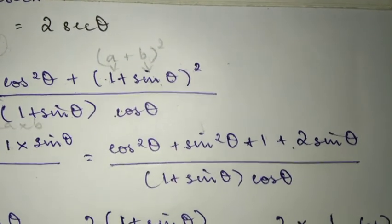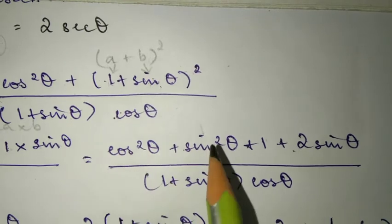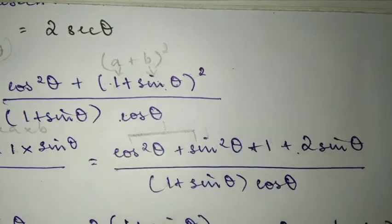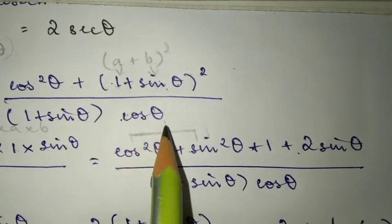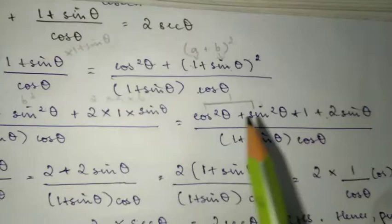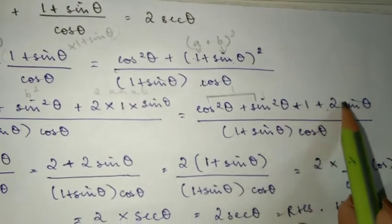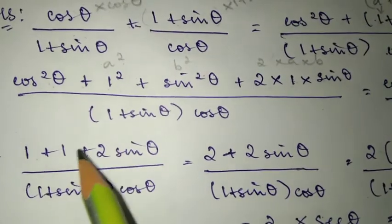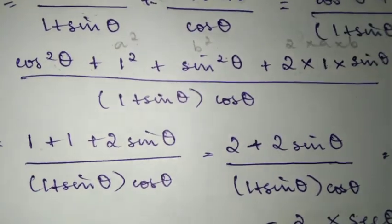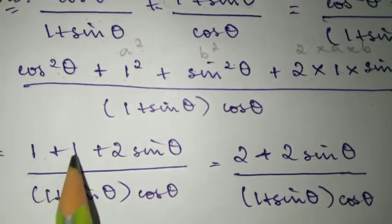Now using the formula that cos squared plus sin squared equals 1, we can write it here. So cos squared plus sin squared equals 1. This leaves us with 1 plus 2 sin theta, and in the denominator we still have 1 plus sin theta times cos theta.